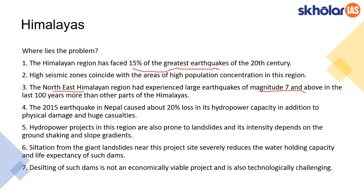For example, the 2015 Nepal earthquake caused almost a 20% loss in hydropower capacity — so it is not just about loss of life, the very purpose of building the dam is also undermined. Additionally, these hydropower projects are prone to landslides. When such landslides happen, siltation occurs — dirt is brought in and it reduces the water holding capacity of the dams, defeating the first purpose of building them.